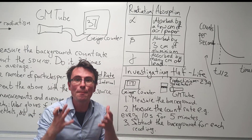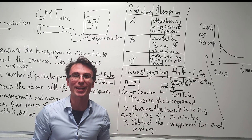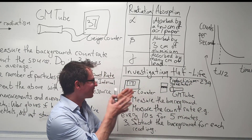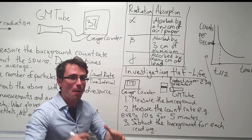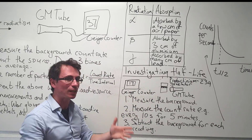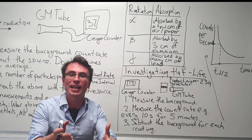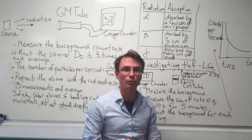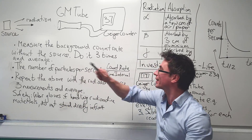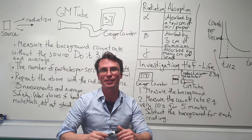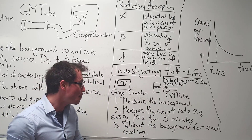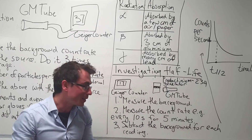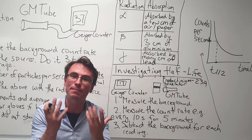We can also use this setup to measure the half-life of a radioactive substance. This is typically done with a protactinium-234 generator. You have a little solvent and then you shake the solvent, but most importantly you place that radioactive substance right in front of the Geiger-Müller tube. As always, we're going to first measure the background radiation following the procedure outlined in the previous experiment, then measure the count rate at sensible intervals — for instance, every 10 seconds for 5 minutes.